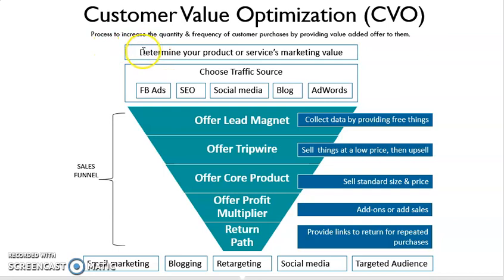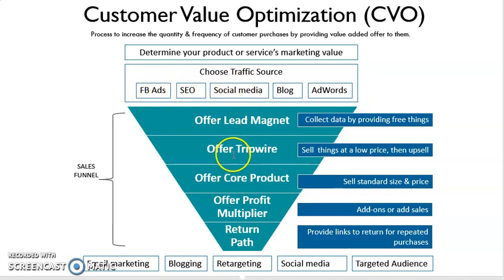Before we continue, we do a promotion — we have to determine the product or service marketing value first. We must know what values we can offer and in what steps. Then we have to know from where or what platform we can use to reach the community or the target audience — for example, Facebook, social media, or other methods.